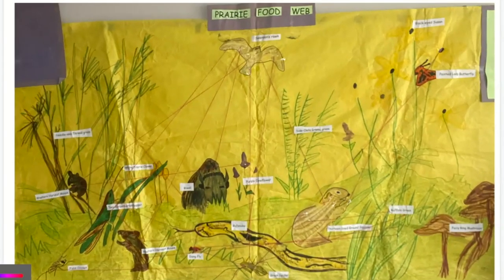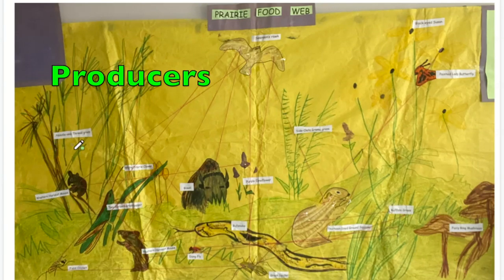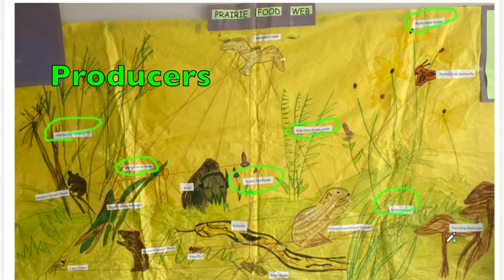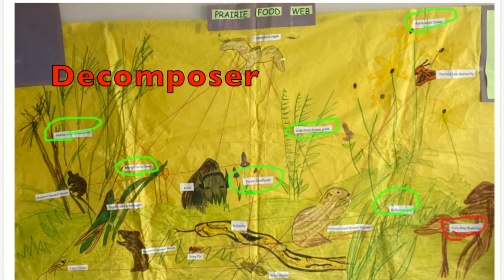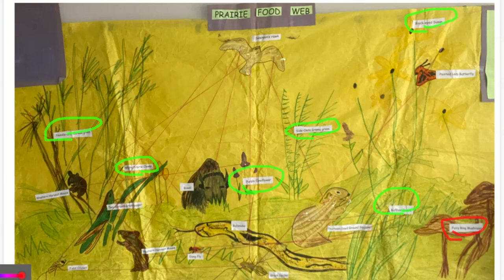Let's find all the different parts of our food web before we trace that energy flow. First are our producers: we've got needle and thread grass, some clover, side oats gramma grass, black-eyed Susan, purple coneflower, and buffalo grass. Now, is that mushroom a producer? No. We know it's a decomposer — it breaks down dead things, so it's not a producer. It's not making its own food through photosynthesis. The rest of the organisms that we can spot are consumers.